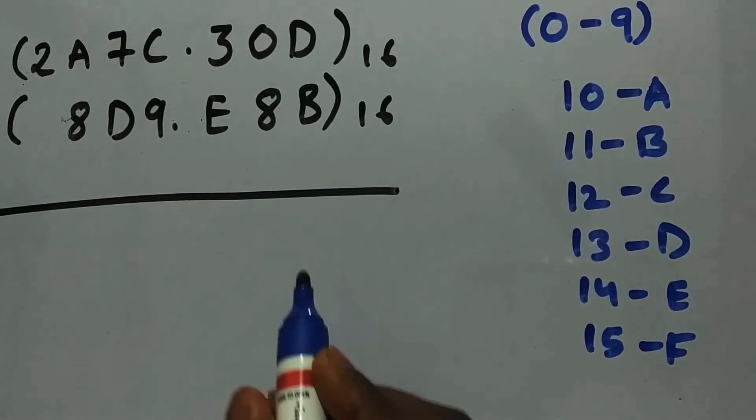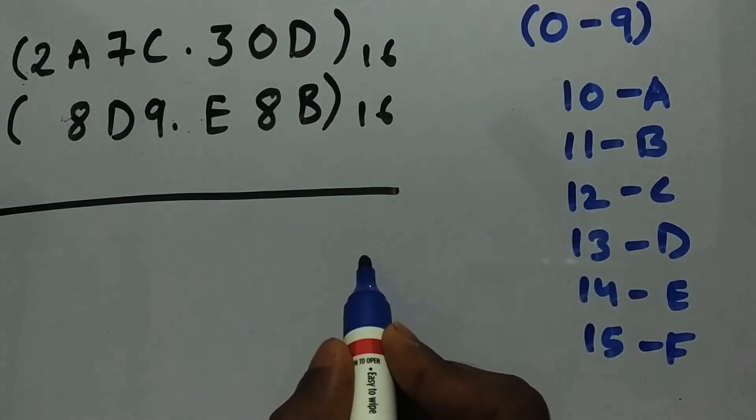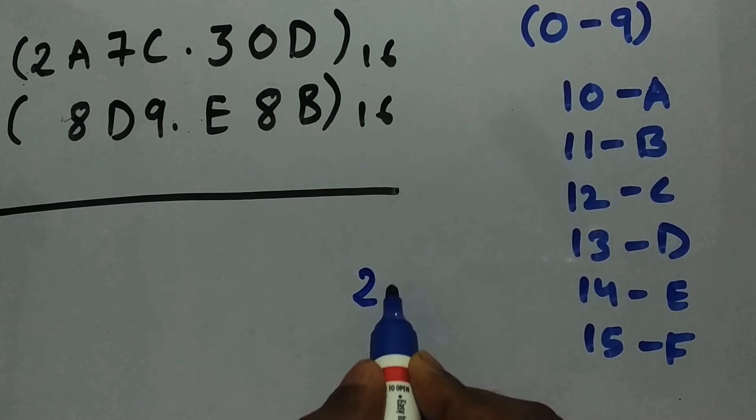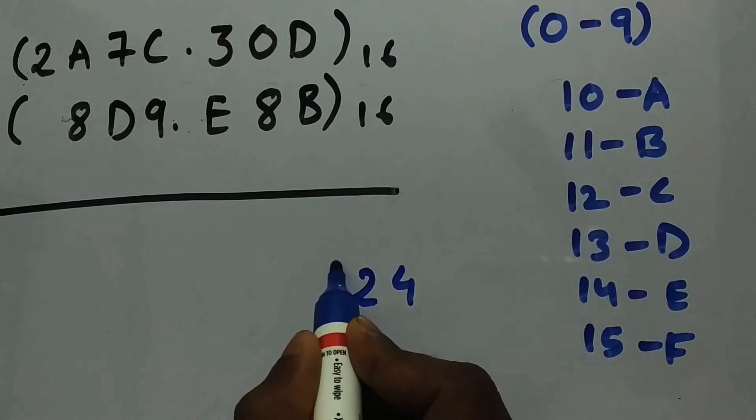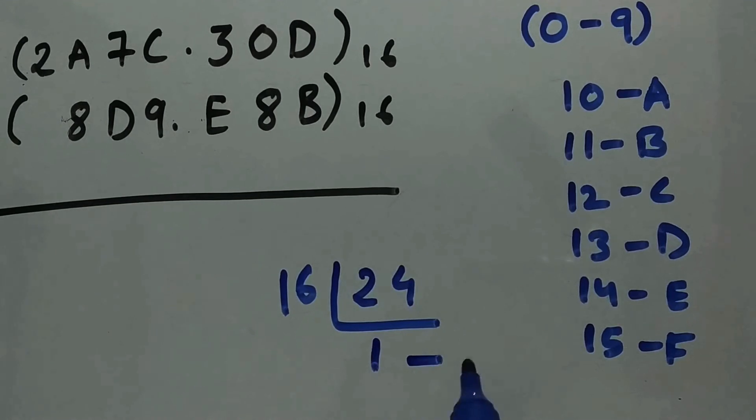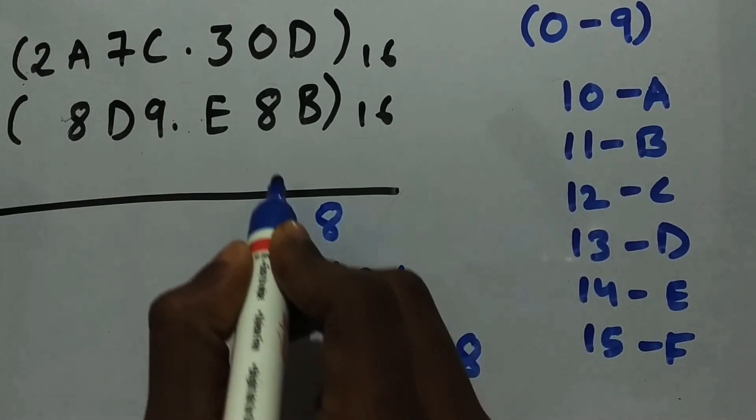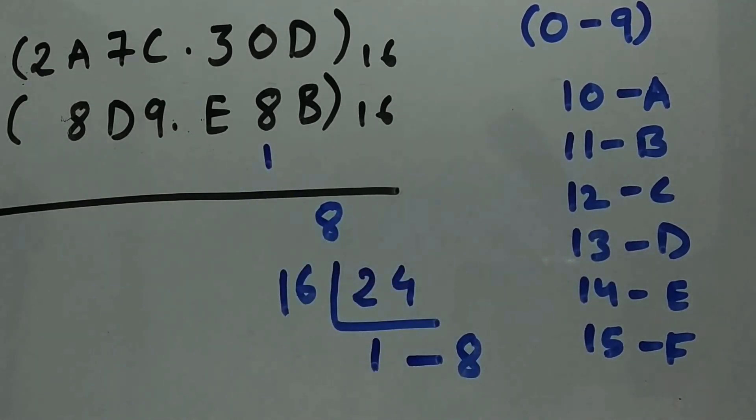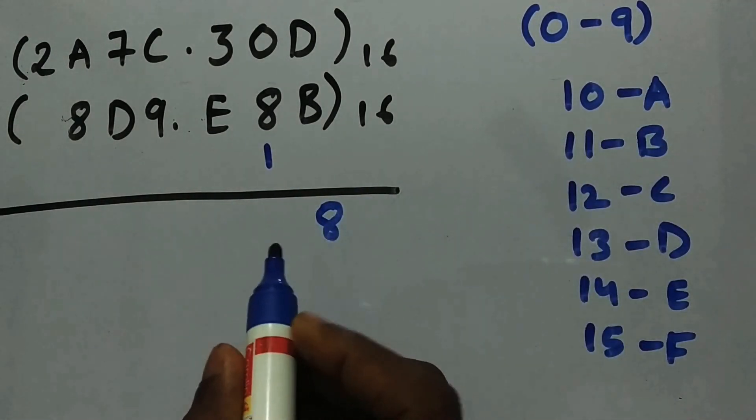carry will be propagated. So what's D over here? D is 13 plus B is 11, so 13 plus 11 is 24. We need to convert this 24 into hexadecimal, so let's convert it: 16 goes into 24 one time plus 8. This is converted into hexadecimal. All we need to write is 8 over here, and 1 is propagated as carry. Now we will add 0 plus 8 plus 1, so 8 plus 1 can be written as 9, so no